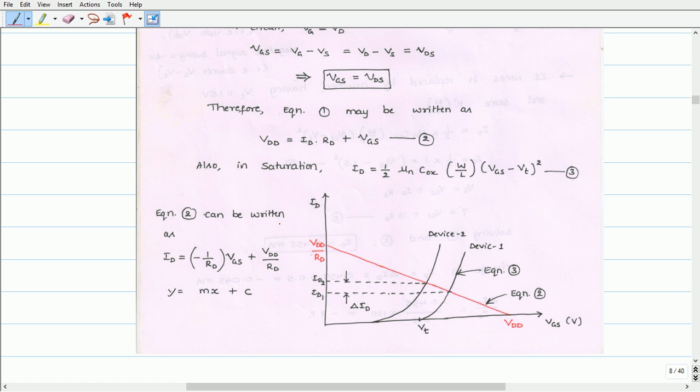So equation 2 can be written as ID equals minus 1 over RD times VGS plus VDD by RD. This is a straight line equation that resembles Y equals MX plus C, where Y equals ID. The slope M of the line is minus 1 over RD. X coordinate is VGS and Y intercept is VDD by RD. This equation can be drawn as a straight line as shown here in red color.